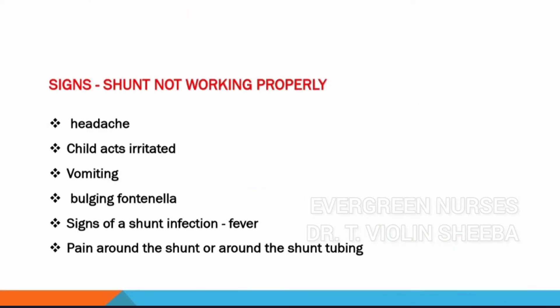The warning signs that the shunt is not working properly include headache, irritability, vomiting, bulging fontanelle, and signs of infection such as fever and pain around the shunt area. These are the signs and symptoms to expect in children after shunt placement if the shunt is not draining properly, meaning some blockage has occurred.